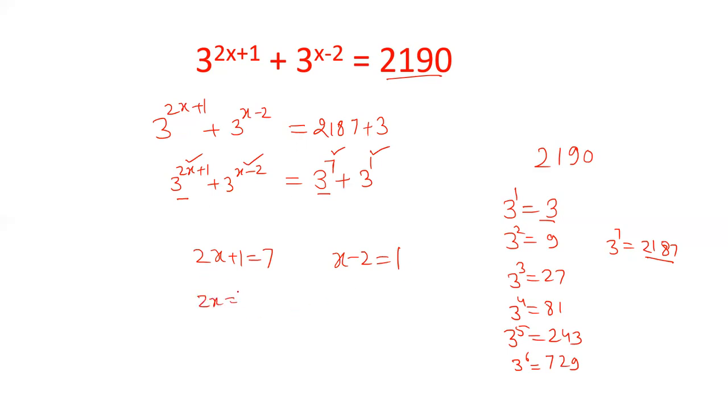Value of 2x will be 7 minus 1, that is 6. Value equals 3. Similarly when you solve this equation it will be 1 plus 2. The answer is same. So we can say that we have assumed the value correctly.